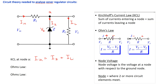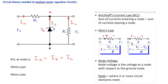Next consider Ohm's law. For a resistor R carrying current I with node voltages Vx and Vy at its terminals, following passive sign convention the terminal where current enters is at higher potential. Therefore the current is I = (Vx − Vy) / R when current flows from Vx to Vy, or I = (Vy − Vx) / R when the direction is reversed.